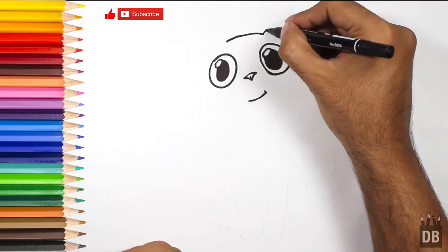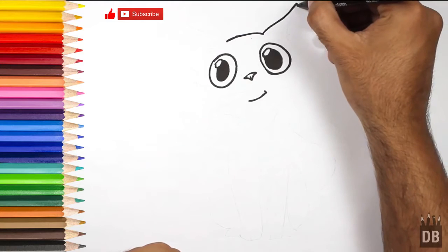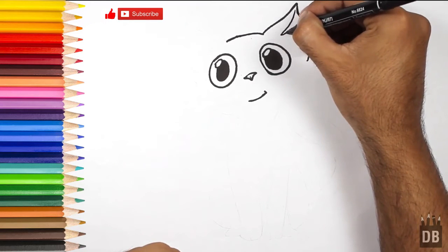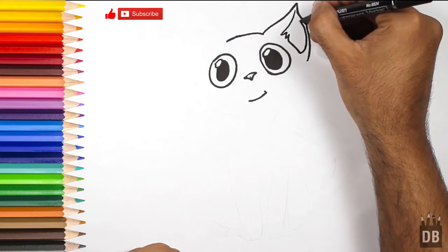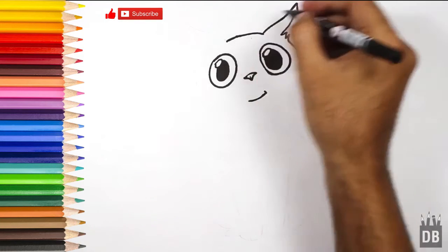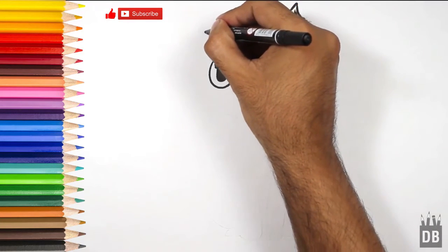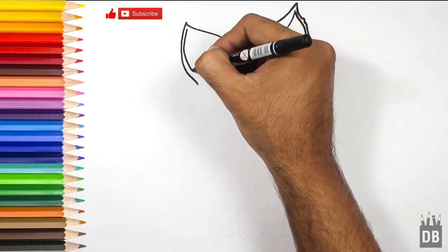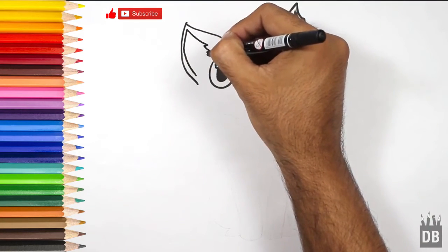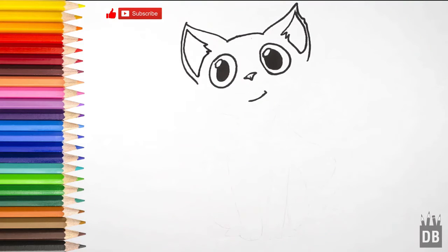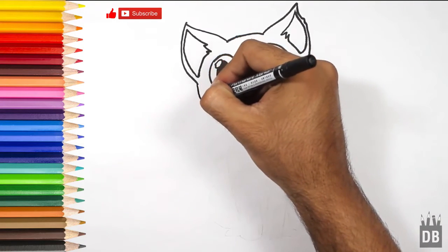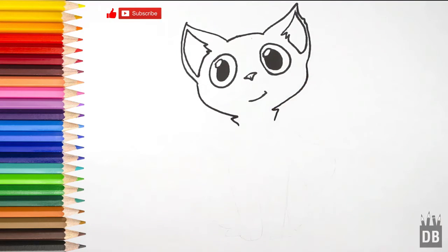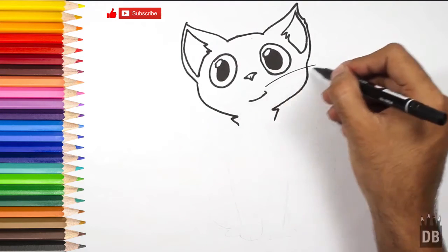From here to here we will start like this, and the second ear. Curve, curve like this. As you can see, now we are going to add the shape. It should look so cute!